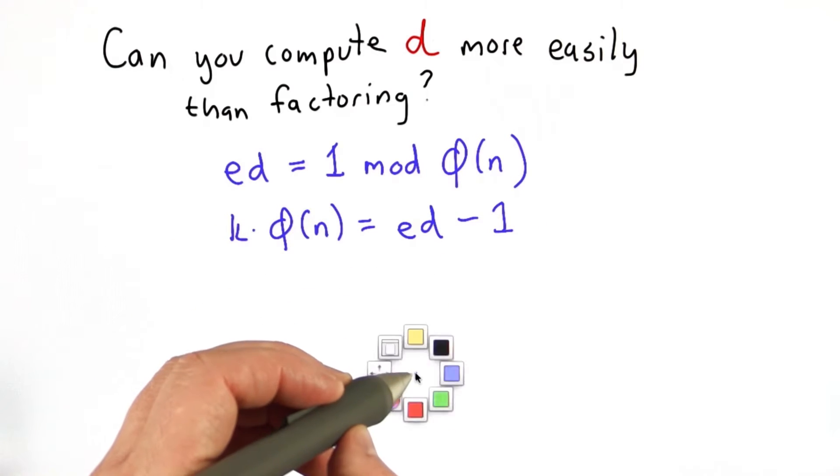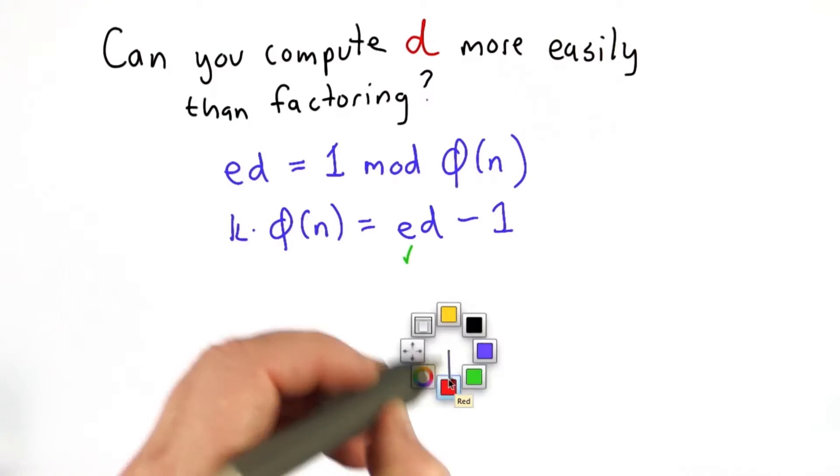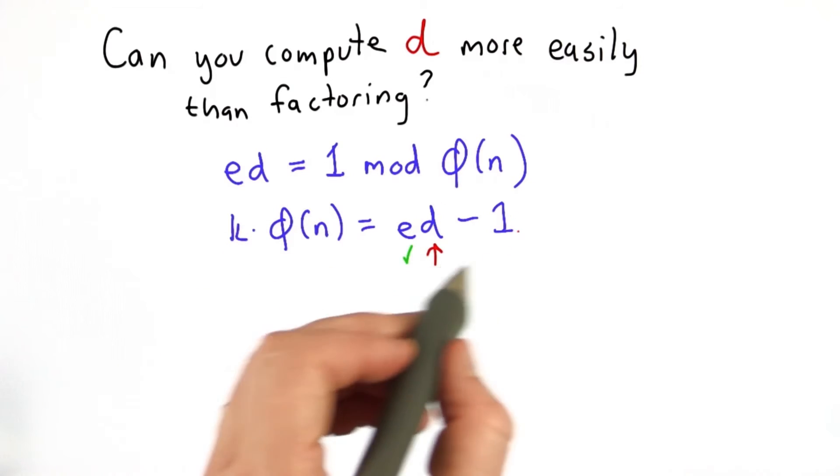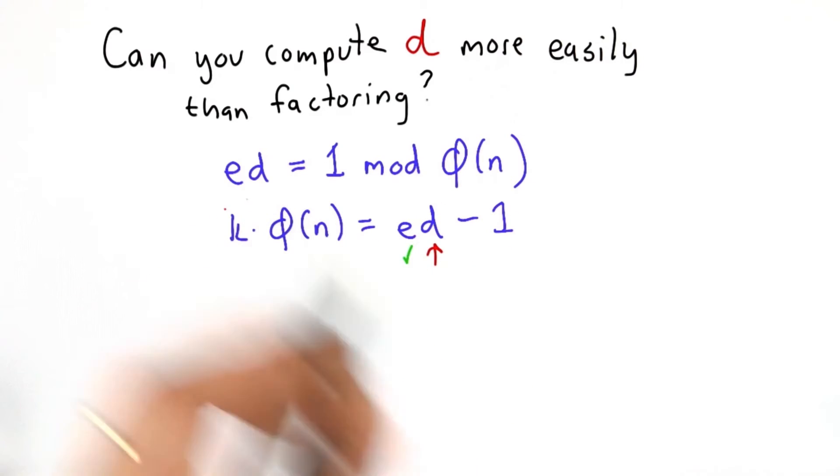We already know the value of e. We're assuming now that we figure out a way to compute d. If we can solve this, then we know a multiple of the totient.